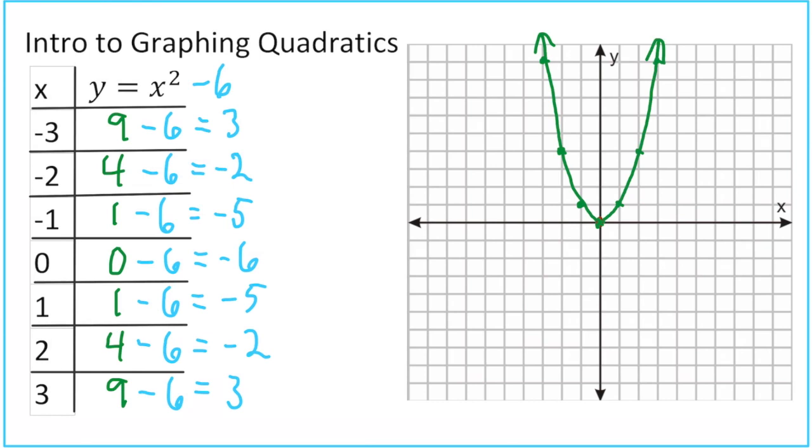So what happens when we put this on the graph? Now my vertex is actually 0, negative 6. From this table, we have x value of 0 and our new y value is negative 6. Then if we go over 1, 1 is now negative 5. Negative 1 is also negative 5. Positive 2 is now negative 2, and negative 2 x value gives you negative 2 y value. Then 3 goes over 3, up 3. If we go left 3, we go up 3.